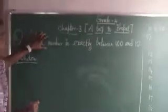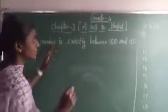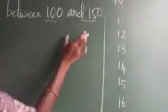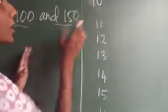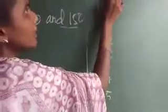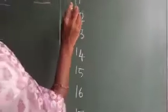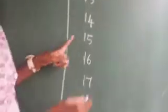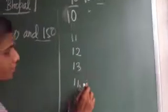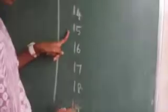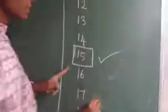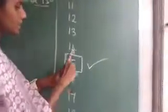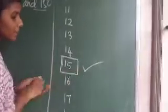Now, which number is exactly between 10 and 20? The numbers lying between 10 and 20 are: 11, 12, 13, 14, 15, 16, 17, 18 and 19. See here — this is the first number, second number, third, fourth — and from the other end: 1, 2, 3, 4. So the exact number lying between 10 and 20 is 15.